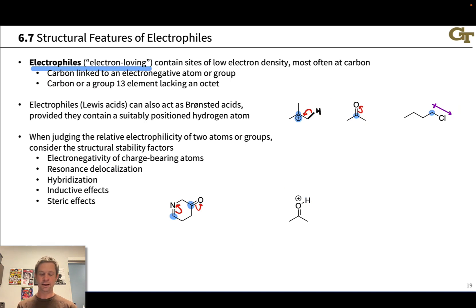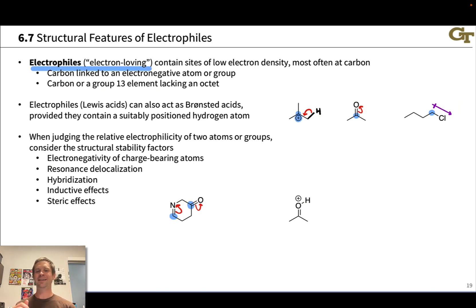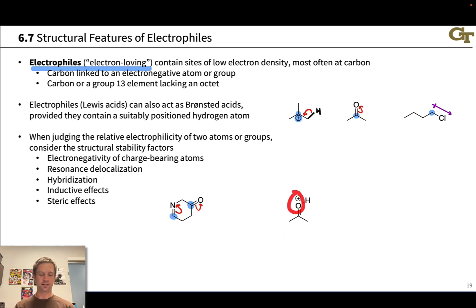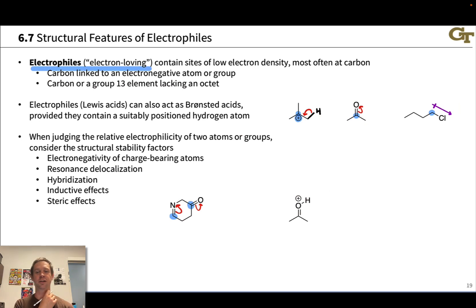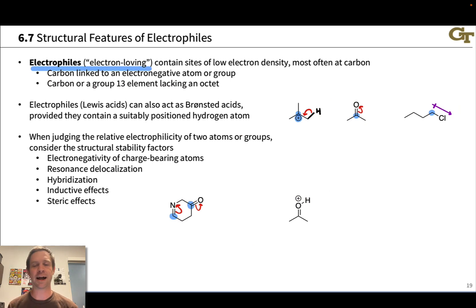This last example highlights an important point: positive formal charge does not necessarily point you to the electrophilic atom in a structure. You may see positive formal charge on oxygen and assume that oxygen is electrophilic—but it's not. On the contrary, that oxygen is perfectly happy; it's satisfying the octet rule, and to accept another pair of electrons would actually leave that oxygen violating the octet rule in a problematic way.